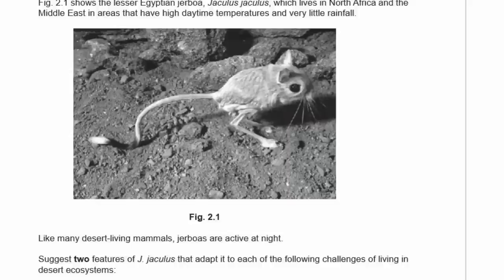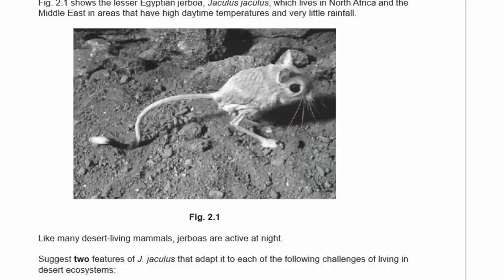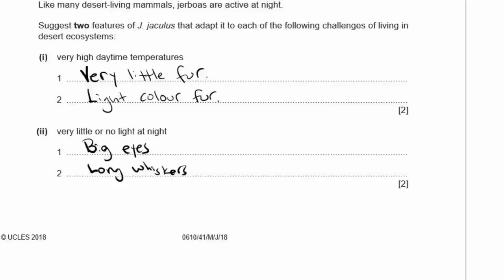For adapting to very little or no light at night: the gerboa has very big, dark eyes with large pupils. It has long whiskers to feel surroundings — that's the purpose of whiskers. It also has large ears to hear rather than see. I would stay away from saying it has lots of rods in the retina or a good sense of smell since you can't confirm those from the figure.